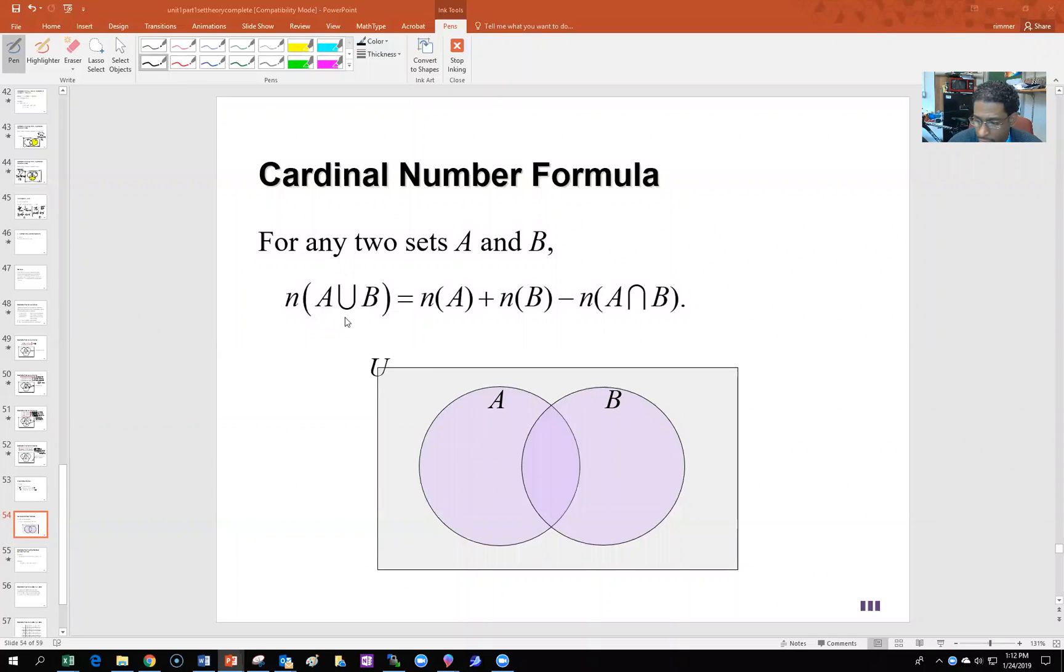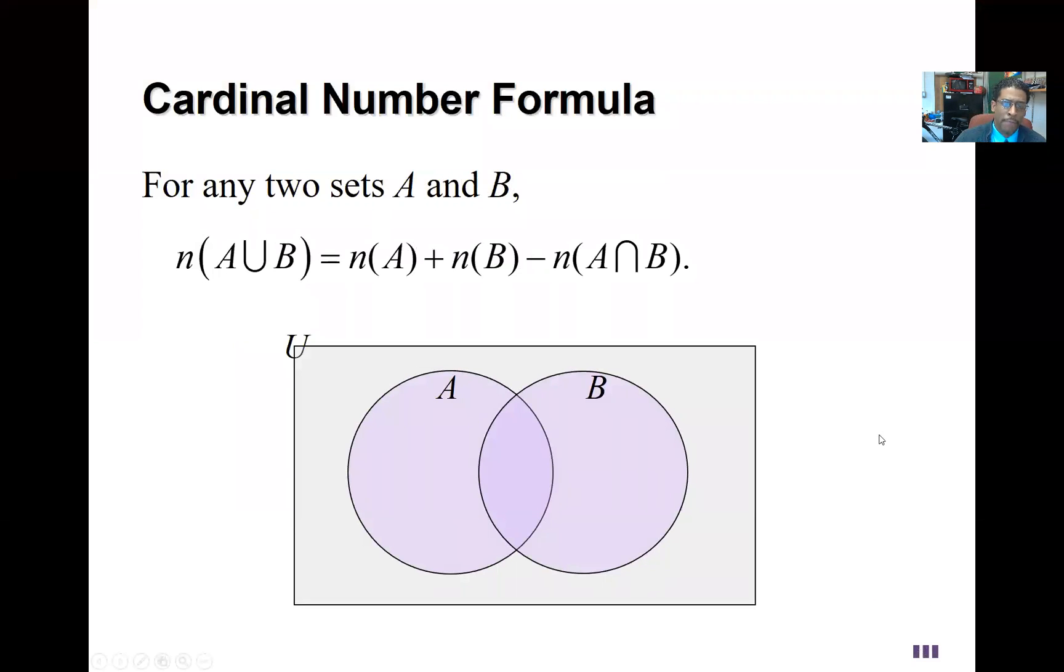Okay, for any two sets A and B, what we have is called the cardinal number formula. The number of elements in the union is equal to the number of elements in A plus the number of elements in B minus the number of elements in the intersection.